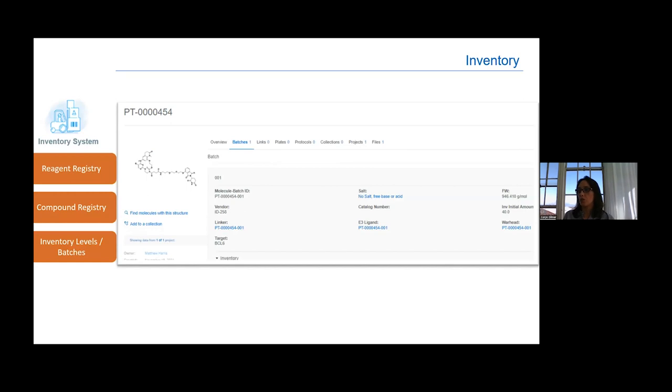The second module we call inventory. Inventory allows you to track and keep track of your reagents and compounds and automatically updates your inventory levels. Right now, this inventory model is going through really big, serious enhancements on our side. So soon it's going to be very fancy for all the users.